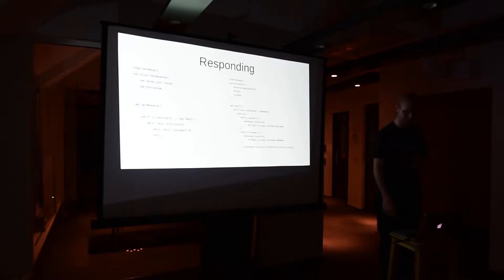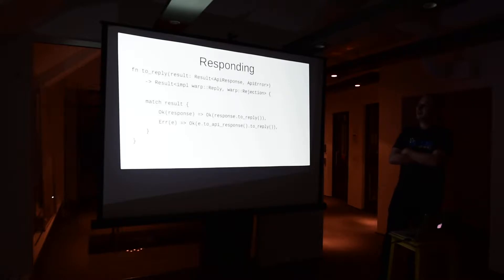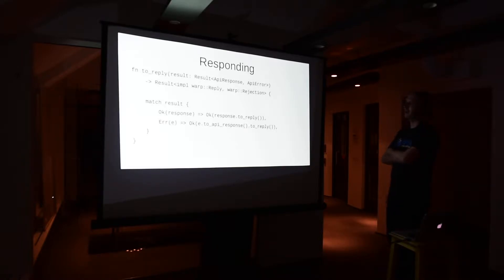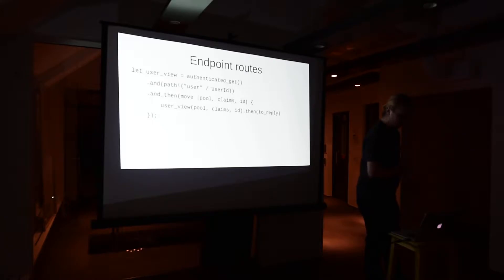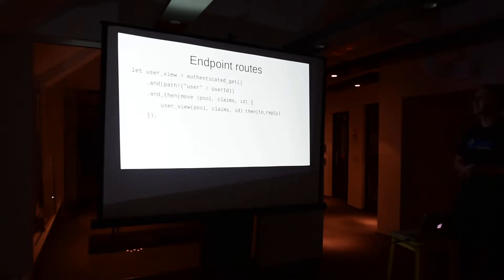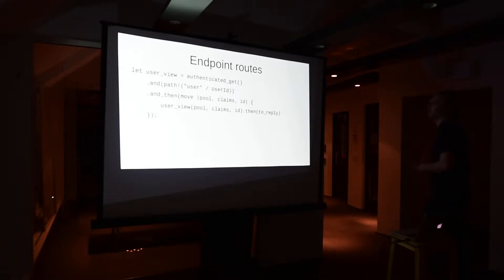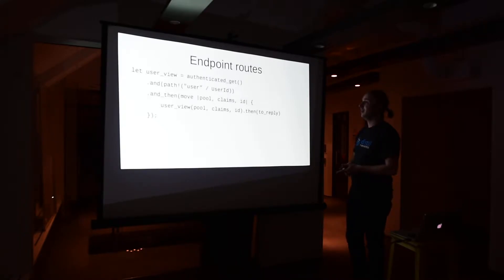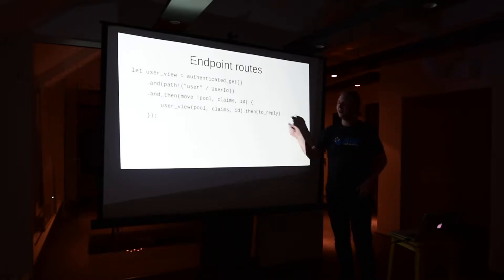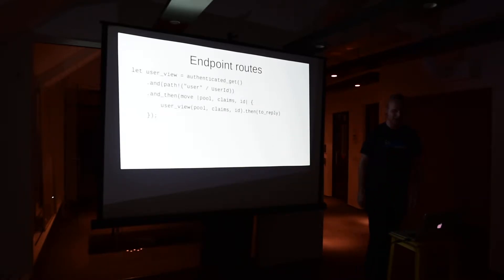An APIResponse is a simple struct with a JSON value and a status code. An APIError is a struct of different error conditions which can be converted to an APIResponse. We get around Warp's limitation by always mapping our valid responses back to an APIResponse in the end. This is what we end up with to tie such an endpoint into Warp — we have our own custom authenticated GET filter, a path just like the ones we saw, and we call our endpoint from the closure and map the results with a to-reply function.